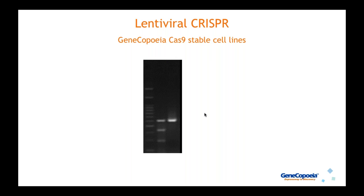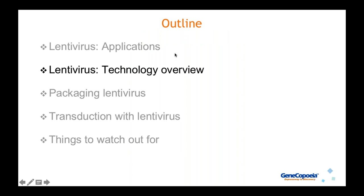This is how we validate our CRISPR-Cas9 stable cell lines using the T7 endonuclease assay. A gel shows PCR products from Cas9 stable cell lines transduced with guide RNA plasmids, treated with or without T7 endonuclease 1, which cuts heteroduplex DNA. The presence of additional bands in every case indicates that the Cas9 is highly active in these cell lines.